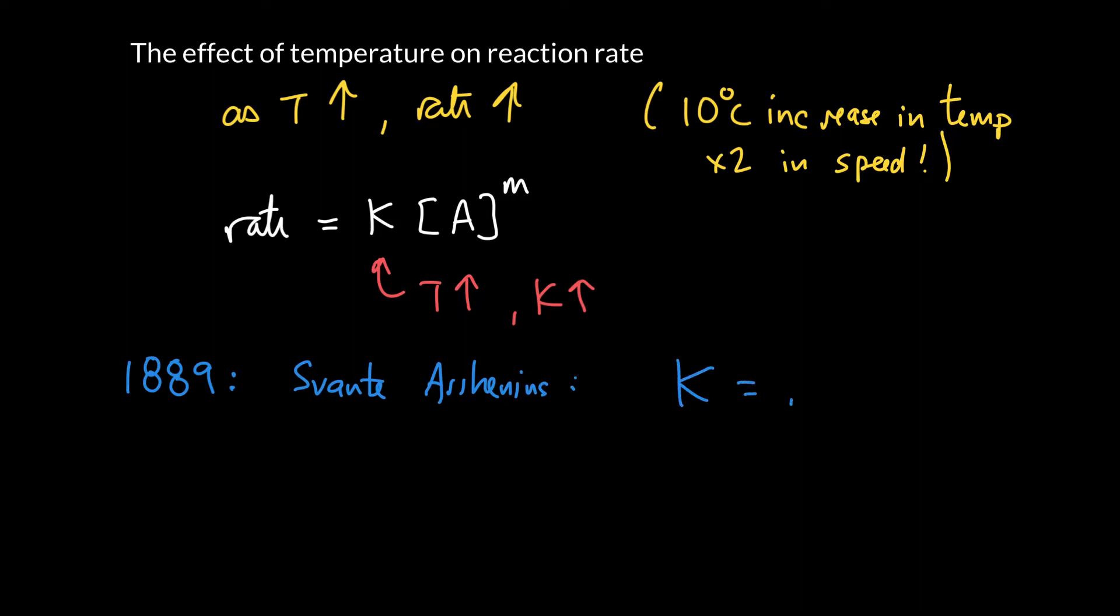A factor A, which we call the pre-exponential factor. This pre-exponential factor has got something to do with the number of collisions the molecules are making per second. It also takes into account the chance that the molecules, when they collide, have the correct orientation to react.